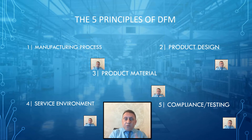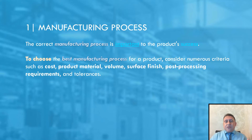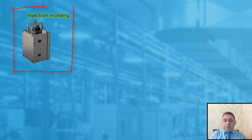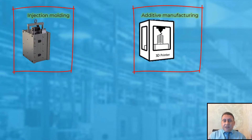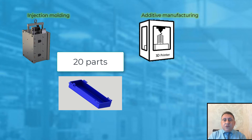Let's start exploring one by one. With regard to manufacturing process: choosing the correct manufacturing process is very important for product success — it will save money and save a lot of time. For example, we have injection molding and 3D printing (additive manufacturing). A customer comes to you needing 20 plastic parts — which process do you go with: injection mold or 3D printer?